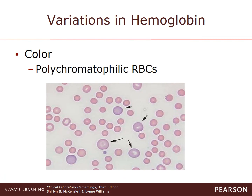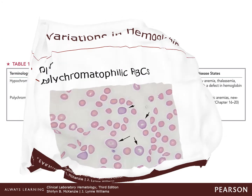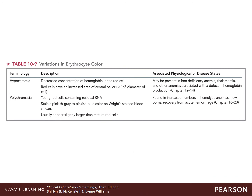Polychromatophilic red cells are usually larger than normal cells with a bluish tinge on the peripheral smear. The bluish tinge is caused by the presence of residual RNA in the cytoplasm. Large numbers of these cells are associated with decreased red cell survival, hemorrhage, and when the bone marrow is trying to produce more cells. Table 10-9 shows a variation in red cell color, its description, and the associated disease state or physiological state in hypochromia as well as polychromasia.